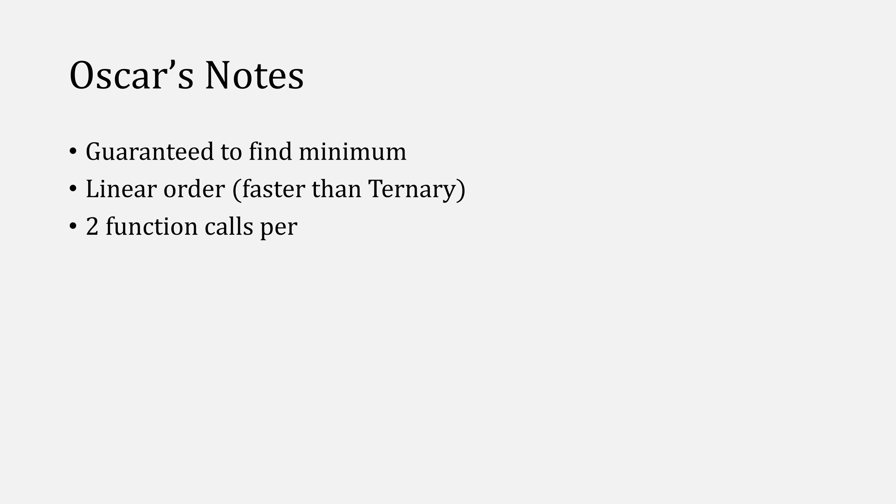Some important takeaways are that dichotomous search is still guaranteed to find a minimum, and it's going to do so faster than ternary search, still with a linear order, reducing the search space by about half every iteration. It still requires two function calls per iteration, and it does have a different terminal condition. But if that really bothers you, you can always switch to ternary search once you get really close.